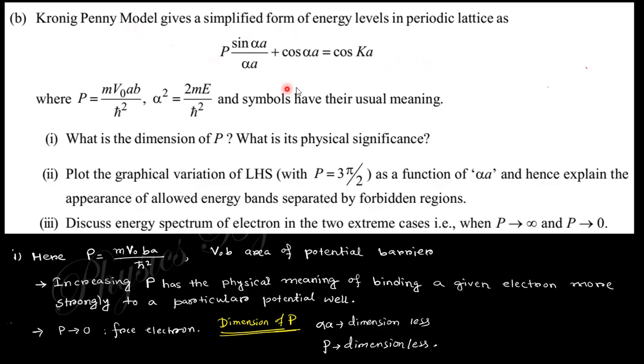From this expression of the Kronig-Penney model, what is the dimension of P? You can see this is dimensionless; alpha times a is dimensionless, and P by alpha is dimensionless, so P is also dimensionless. What is the physical significance? P signifies the electron potential barrier. P tends to infinity is the rigid case, and P tends to zero is for free electrons.